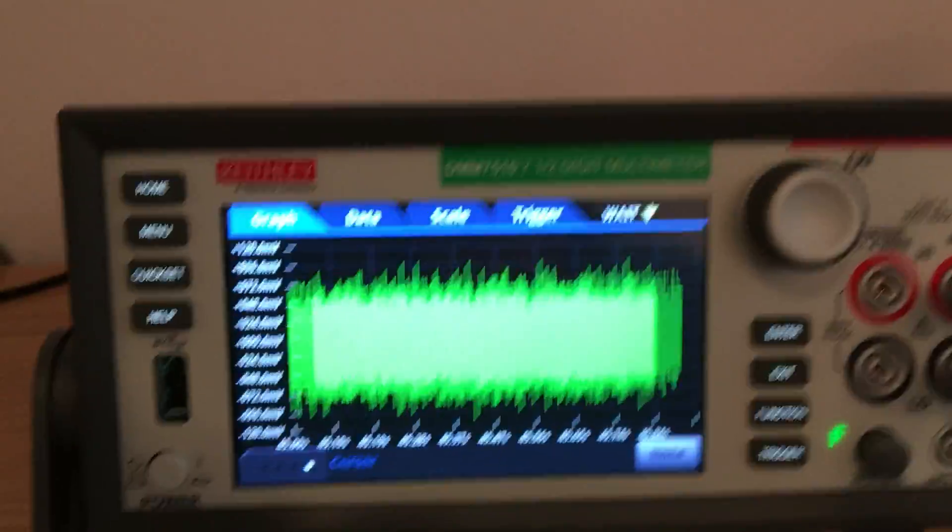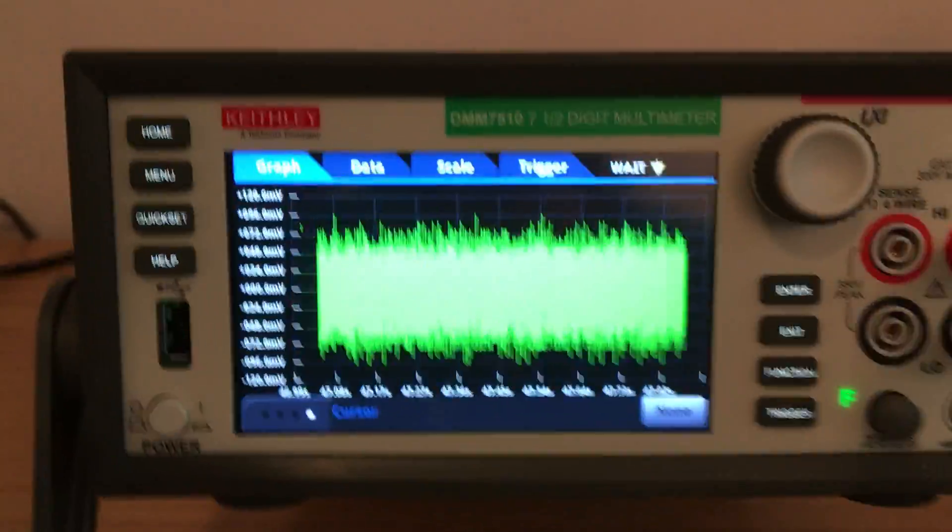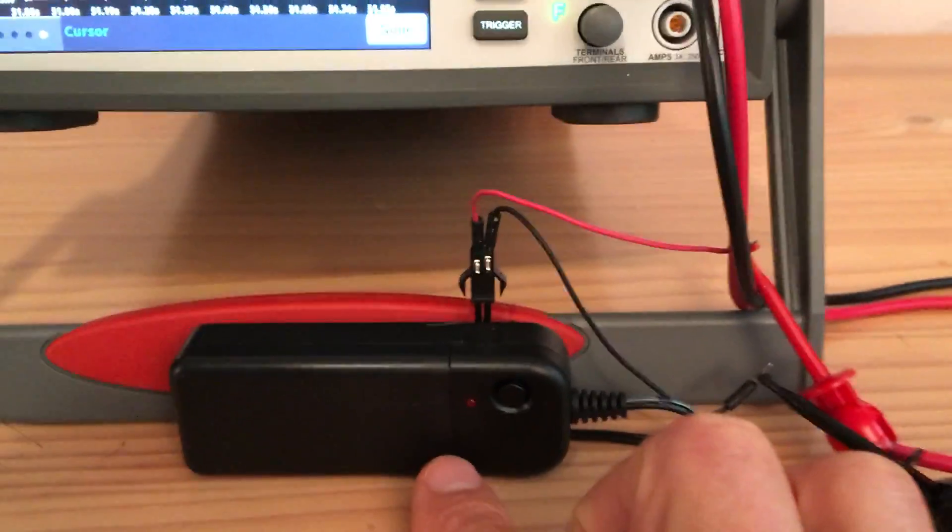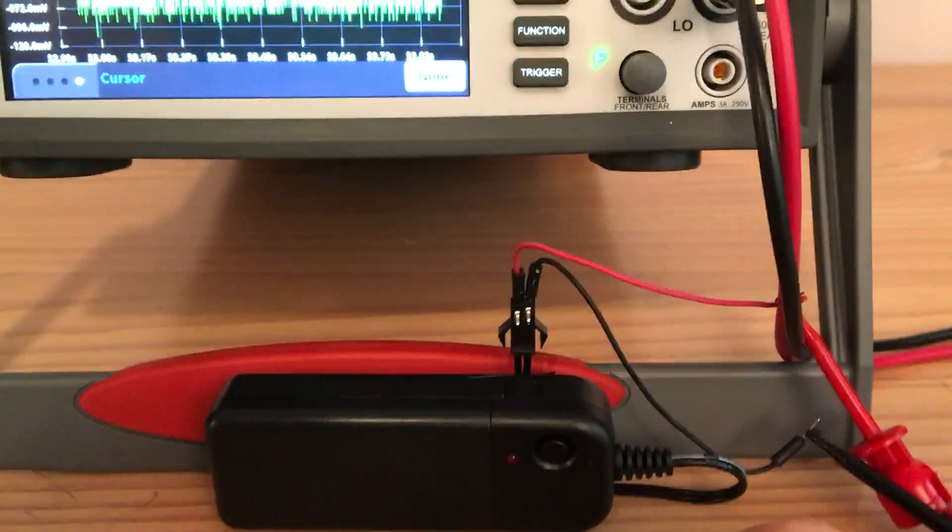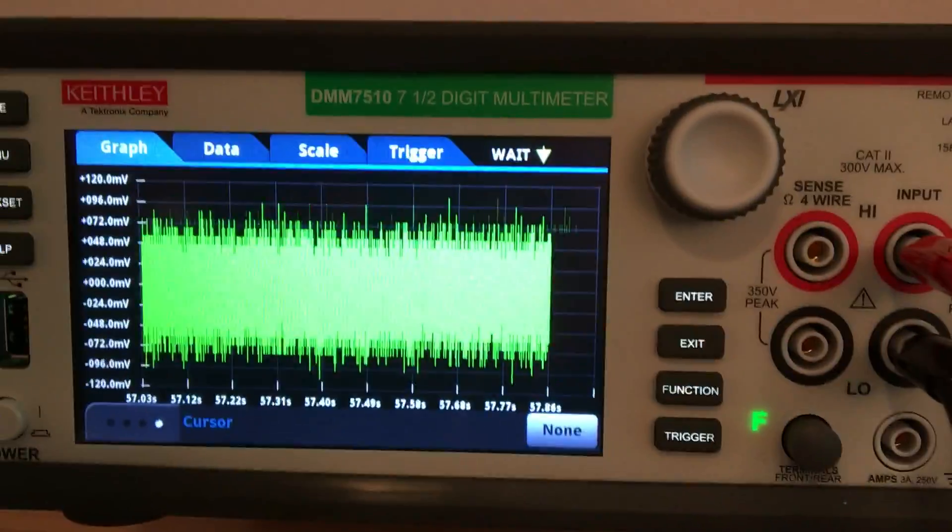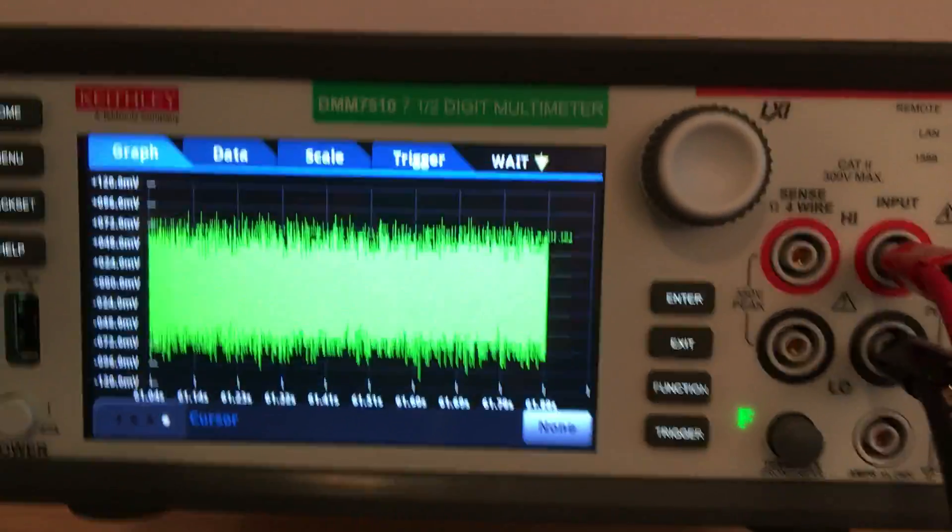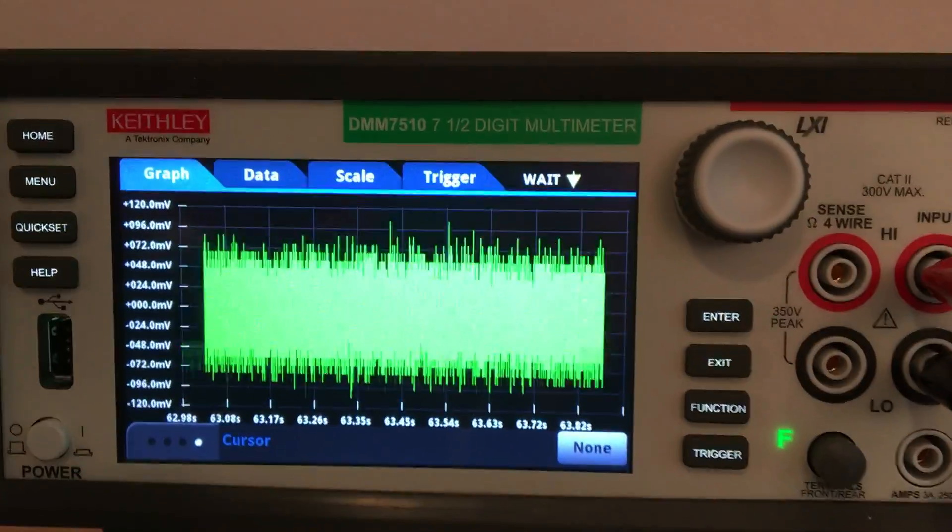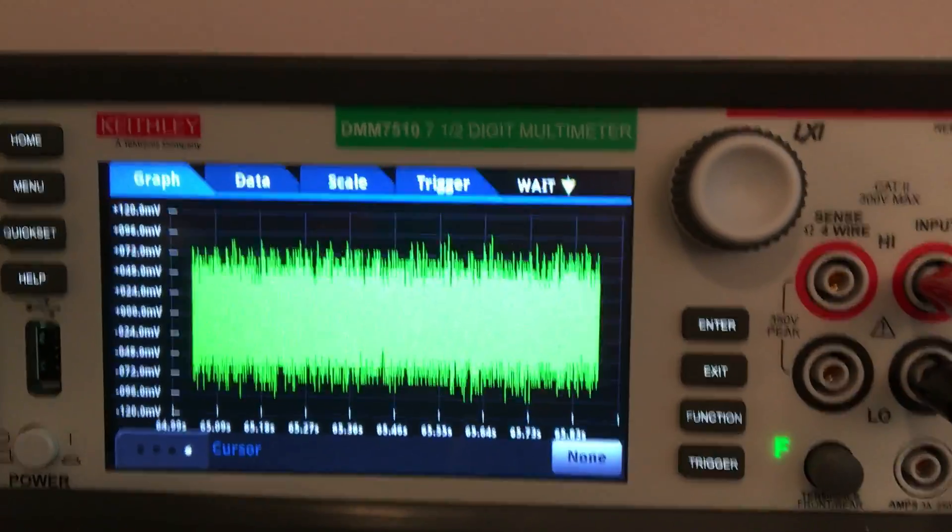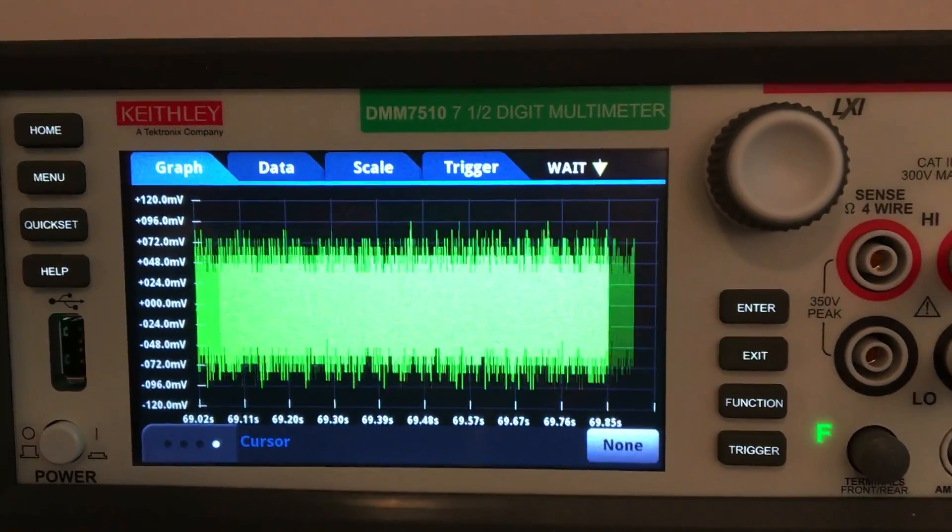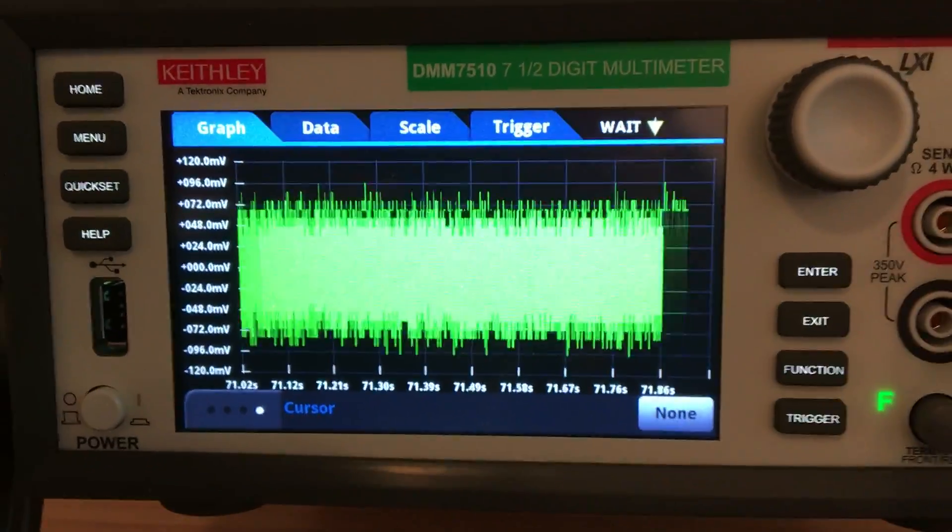I'm going to use this Keithley DMM 7510 to do what I think is a unique measurement. What we have here is an EL wire converter that takes a three-volt signal from two AA batteries and inverts it to a very high AC voltage, around 400 volts when there's no load on it. That's to drive fluorescent EL wire typically used in Halloween costumes or Christmas decorations.